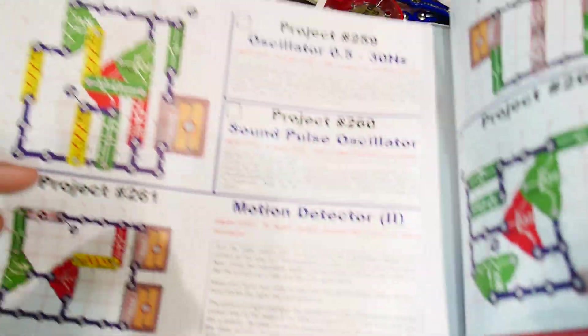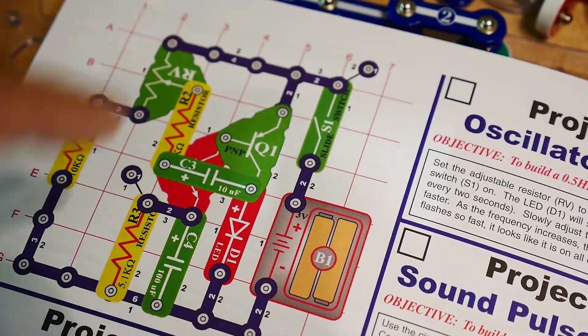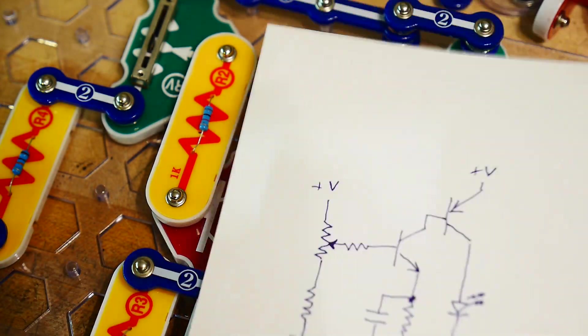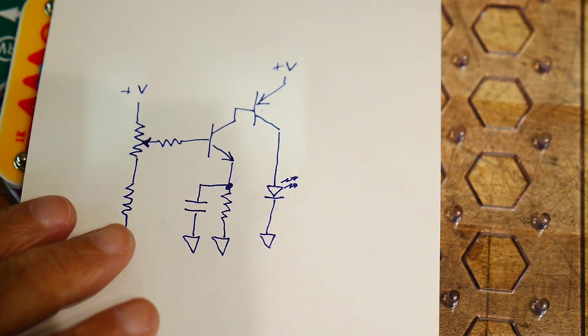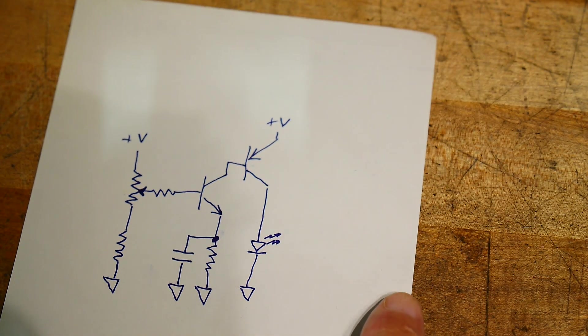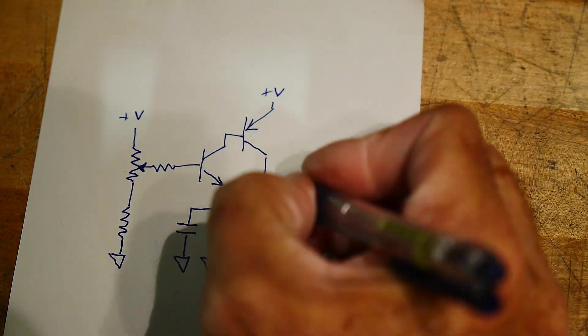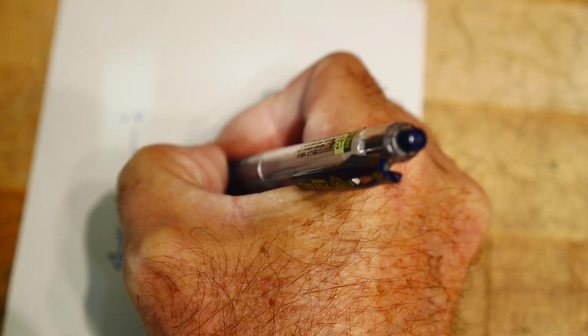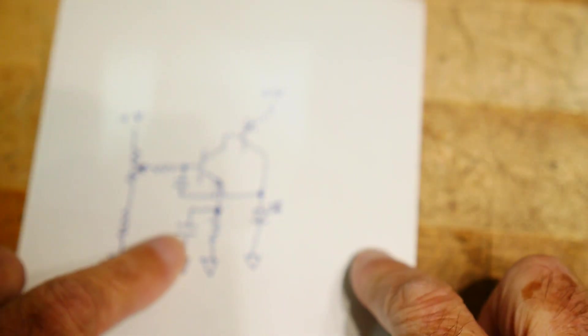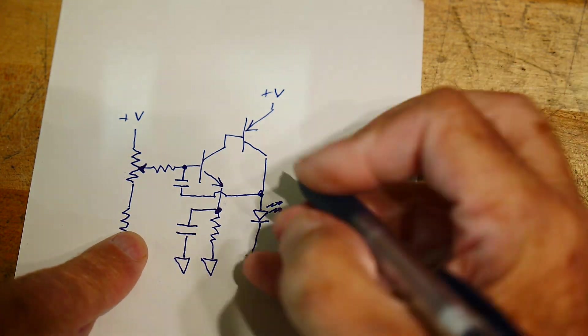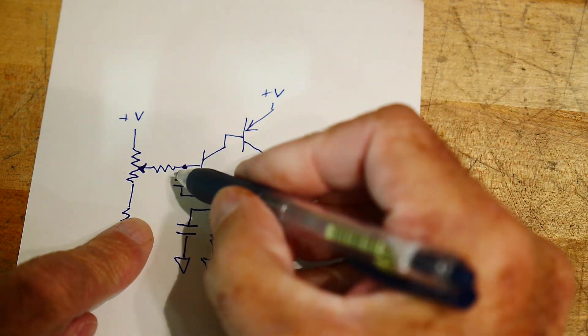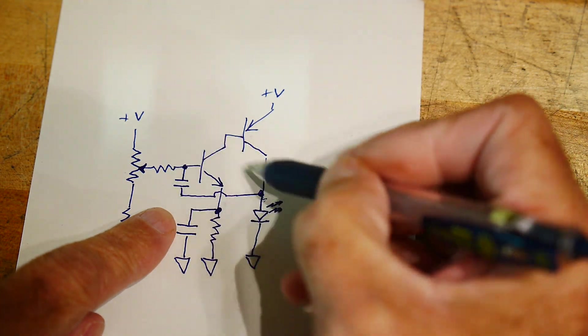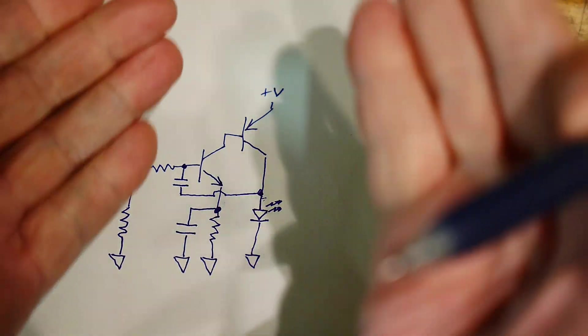In the book there's this magic C3 capacitor that goes in a funny spot. Let's take a look at the schematic again. Where does C3 go? Let me put this down so I can draw on it. Alright, it goes here - it's a feedback capacitor from the output to the input. It adds some delay, adds a way for this thing to oscillate.